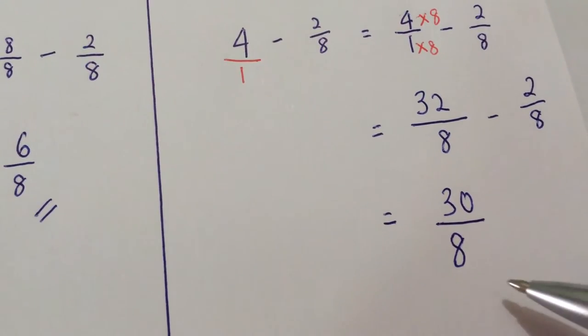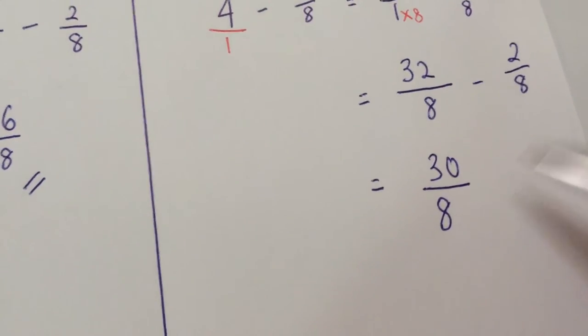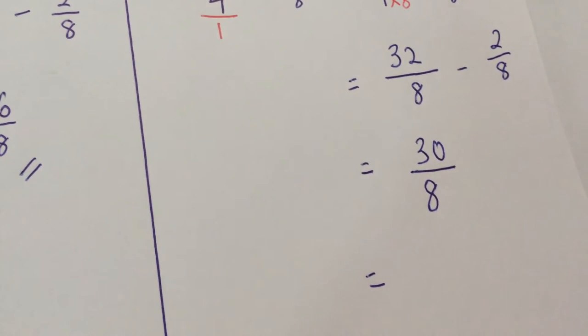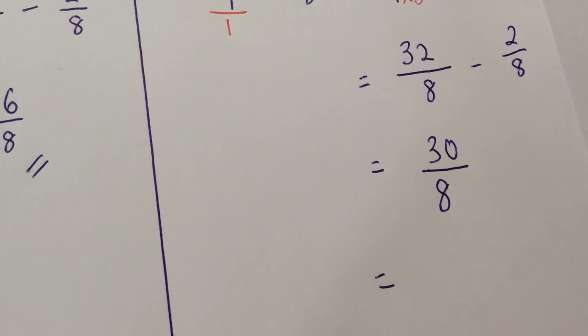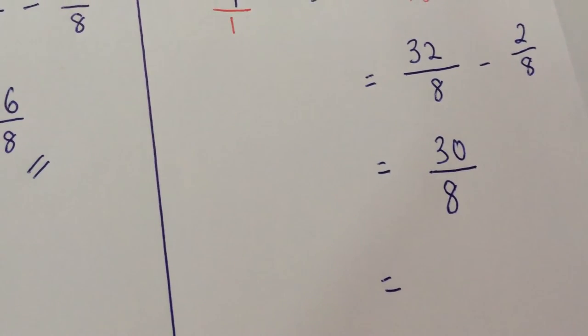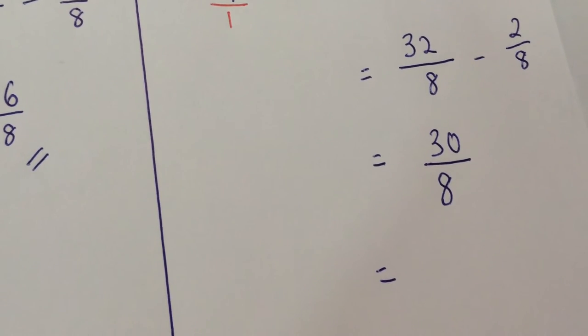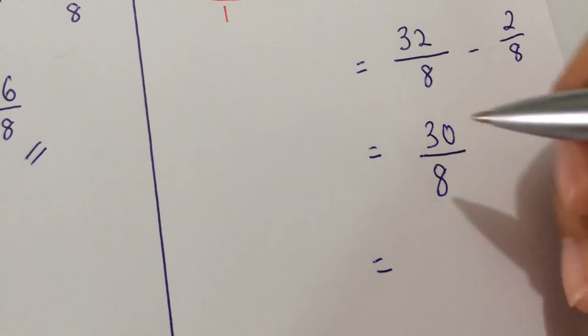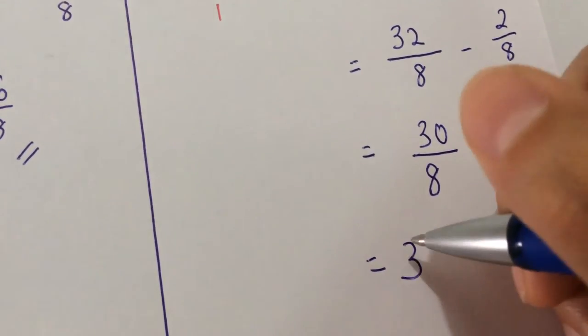Now, 30 out of 8 is an improper fraction. If the question would like you to leave your answer as a mixed number, then go ahead to rewrite it as a mixed number.